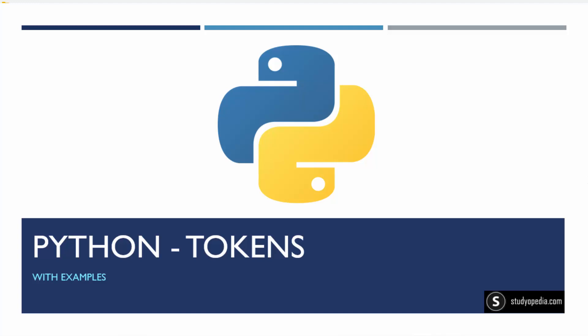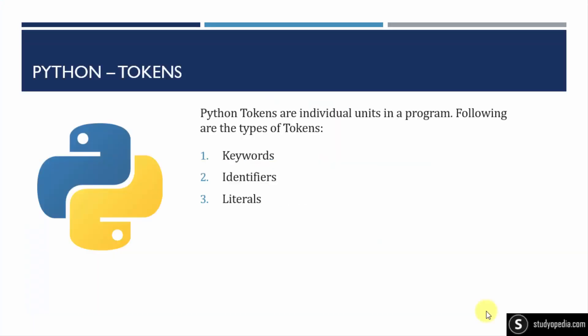In this video we will learn about tokens in Python with examples. Python tokens are mainly individual units in the program. They include keywords, identifiers, and literals. Let's see them one by one.